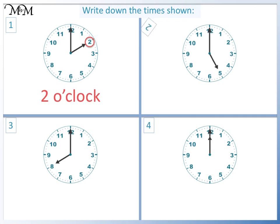Question 2. The minute hand is pointing to 12. The hour hand is pointing to 5. The time is 5 o'clock.